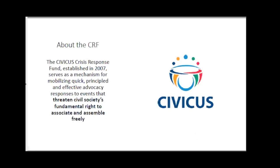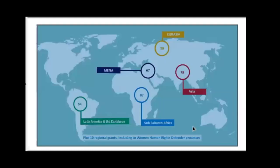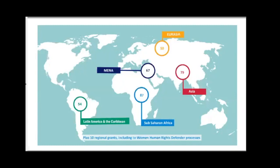Since its inception, the crisis response fund has supported partners from across the world — you'll see a nice spread of applicants. We aren't able to give any funds to partners in the USA because the funds are processed through the U.S. State Department. In addition to supporting national initiatives, we also support regional or international initiatives facing restrictions on freedom of assembly and association.